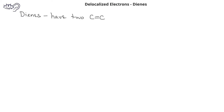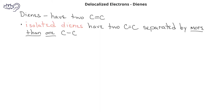These compounds are known as dienes, the 'di' meaning two, and the 'enes' referring to carbon-carbon double bonds. We'll introduce two different types of dienes. The first are isolated dienes, which have double bonds separated by more than one single bond. In this example, we see that the two double bonds are separated by two carbon-carbon single bonds.